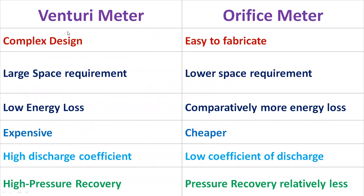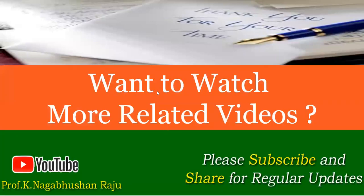In comparing the venturimeter and orifice meter: the venturimeter is complex in design while the orifice meter is easy to fabricate; the venturimeter requires large space while the orifice meter requires less space; the venturimeter has low energy loss while the orifice meter has comparatively more energy loss; the venturimeter is expensive while the orifice meter is very cheap; the venturimeter has a high coefficient of discharge while the orifice meter has a low coefficient; and the venturimeter has high pressure recovery while the orifice meter has relatively less. Thank you for your time. Hope you have enjoyed the session.